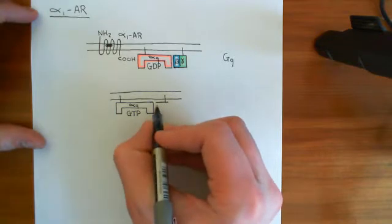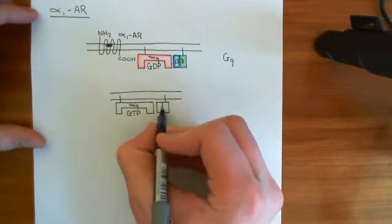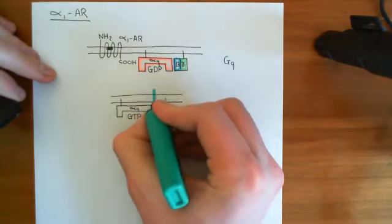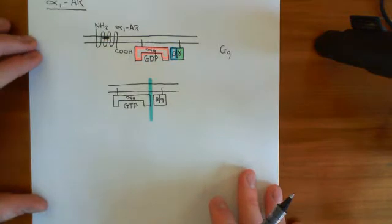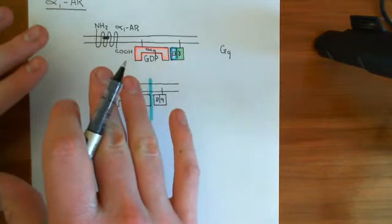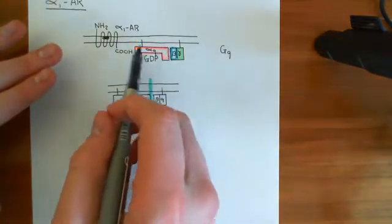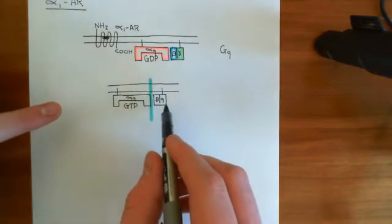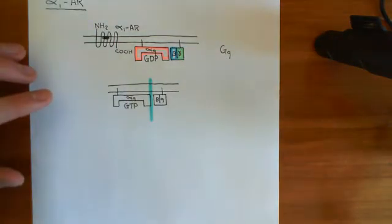The beta-gamma subunit should be separate from the alpha-Q subunit — they are now separated, just floating around in the membrane. This will be happening all over the place: wherever you're getting activation of these alpha-1 adrenoreceptors, they will be finding heterotrimeric GQ G-proteins and activating them to produce separate beta-gamma complexes and the alpha-Q subunit now with GTP bound rather than GDP.